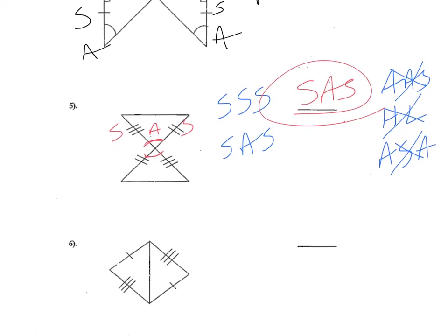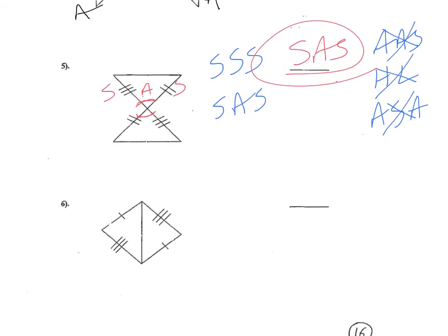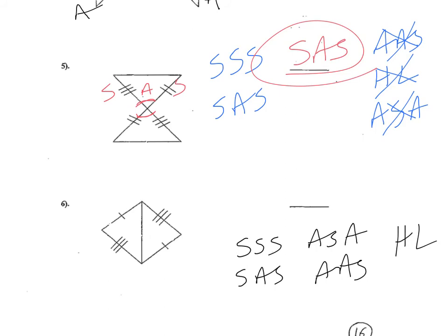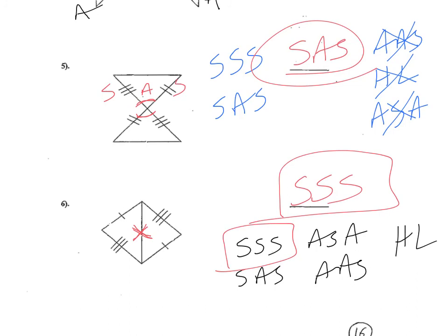On all of these, your choices are side, side, side; side, angle, side; angle, side, angle; angle, angle, side; or hypotenuse leg. In this next picture, I already have two sides congruent to two other sides, and I appear to be short — but I can use the reflexive piece so these middle pieces are congruent to themselves. Now I have side, side, side. It becomes rather evident which of the five triangle congruences to use when proving triangles are congruent.